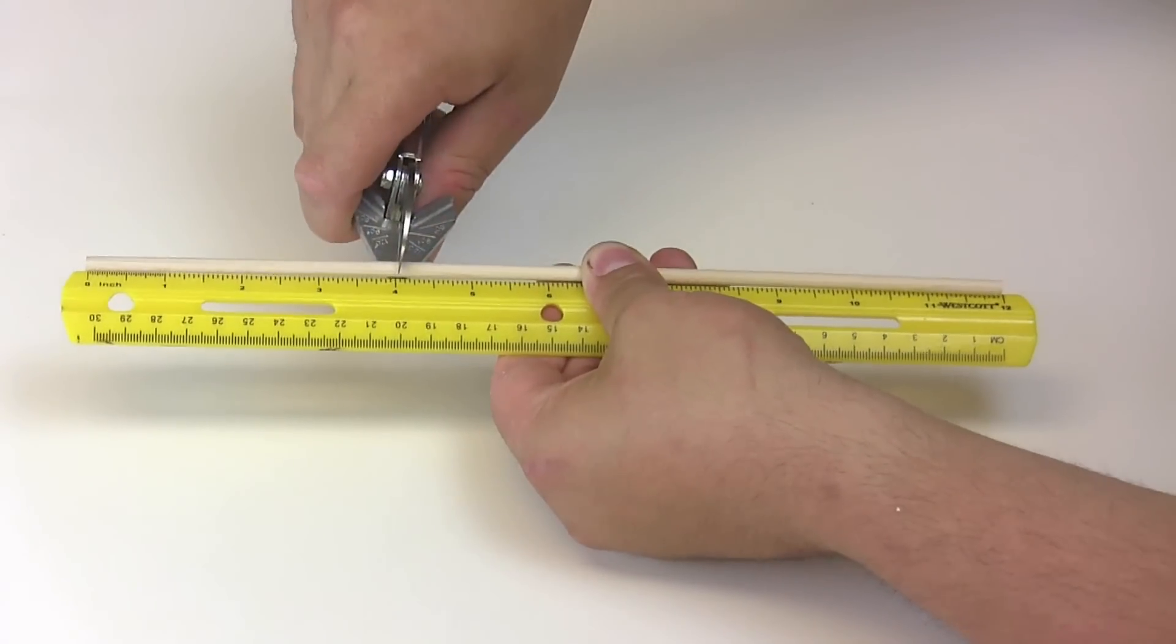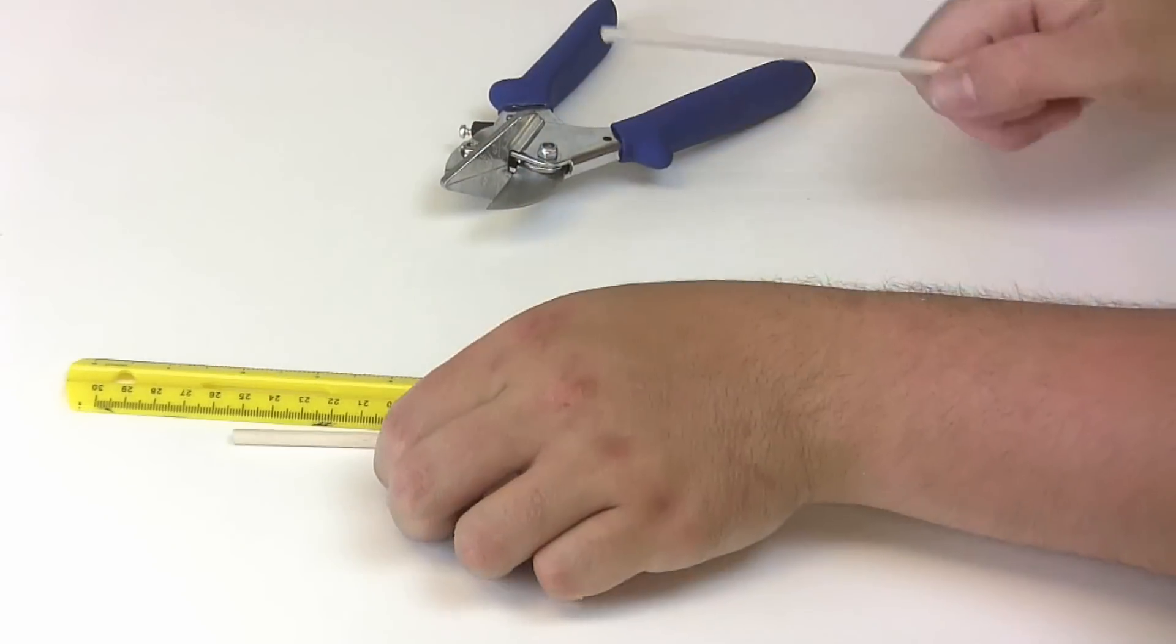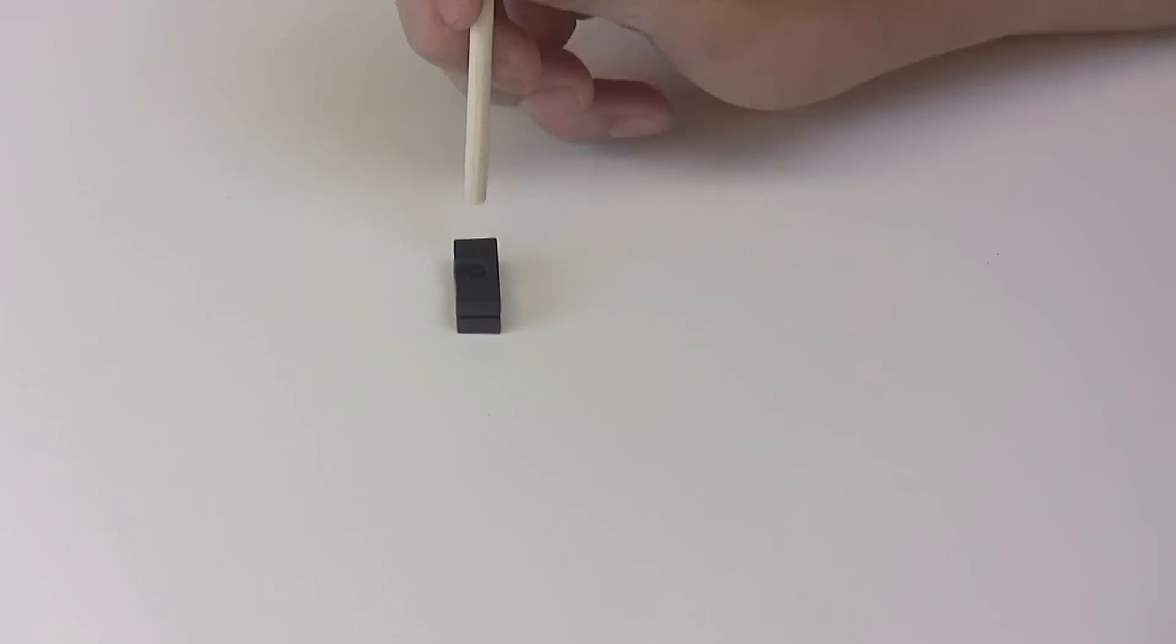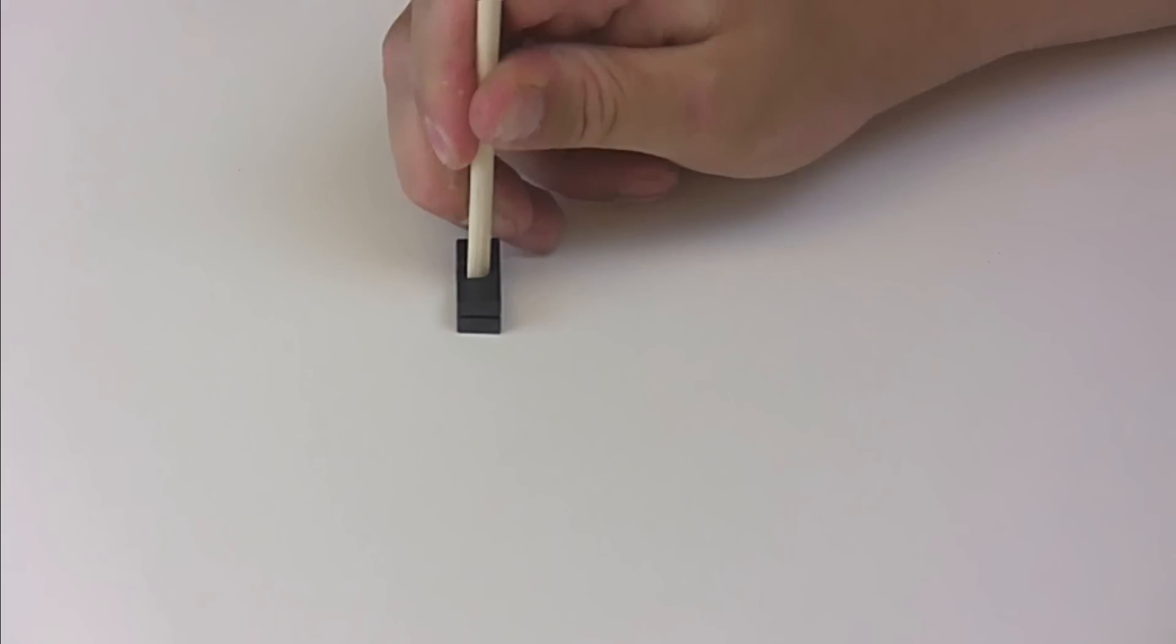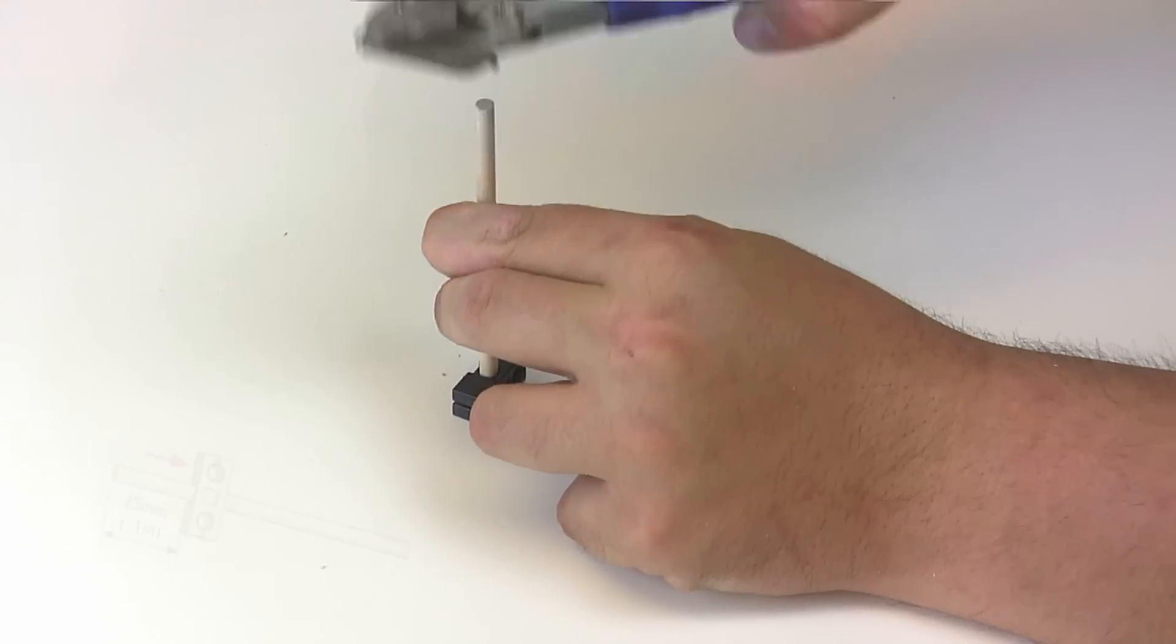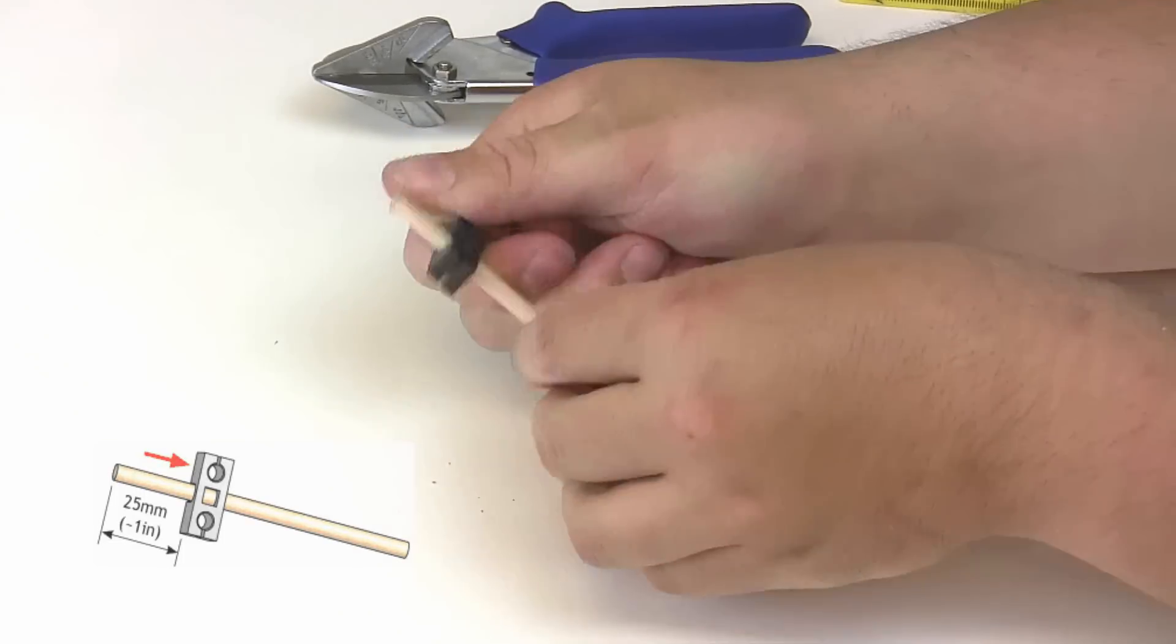Now take your other dowel and cut it to 100mm which is about 4 inches. With your cut dowel place it into the center hole of the perpendicular block. If it's a little hard to just push, give it a few taps with the easy cutters. Then you can flip it over and slide it down the rest of the way.